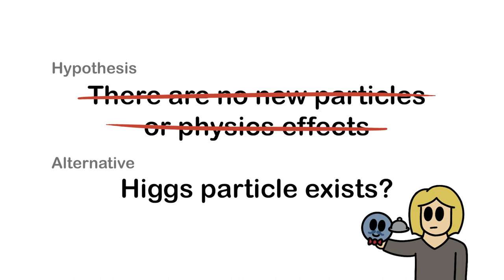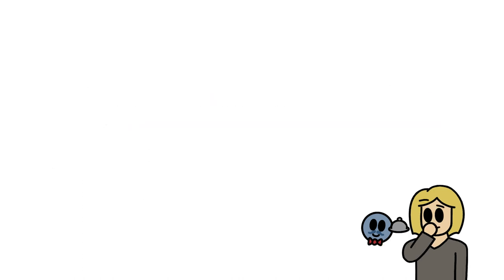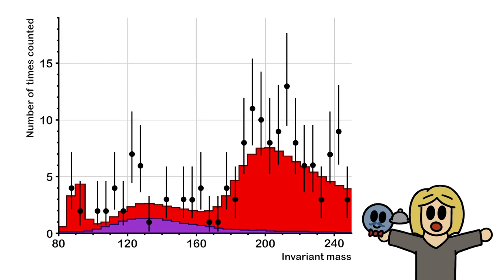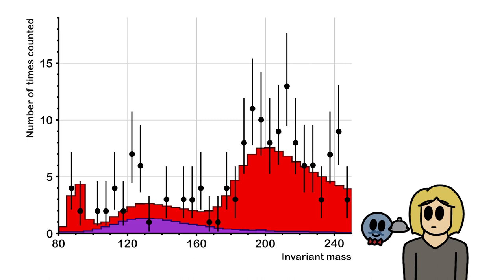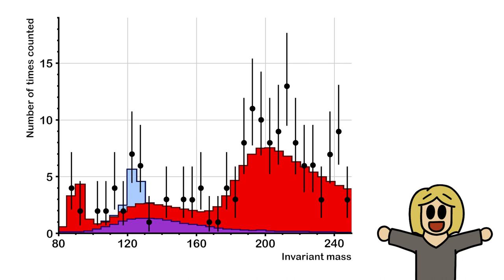To test if the Higgs particle exists, we need to make a prediction for the Higgs particle as well. How many extra particle sets would we count if the Higgs were indeed to exist? If the Higgs were to exist, this alternative prediction would match the data better than our current prediction does. This is the additional contribution, and you can see that we can match the data way better with it than without.